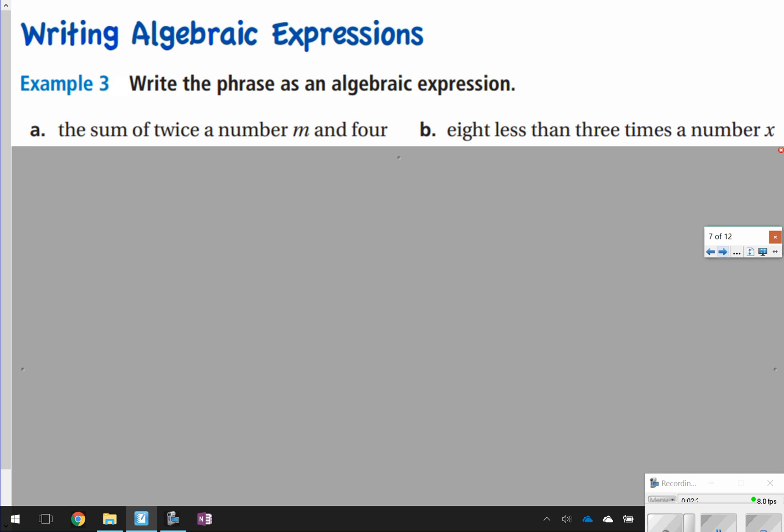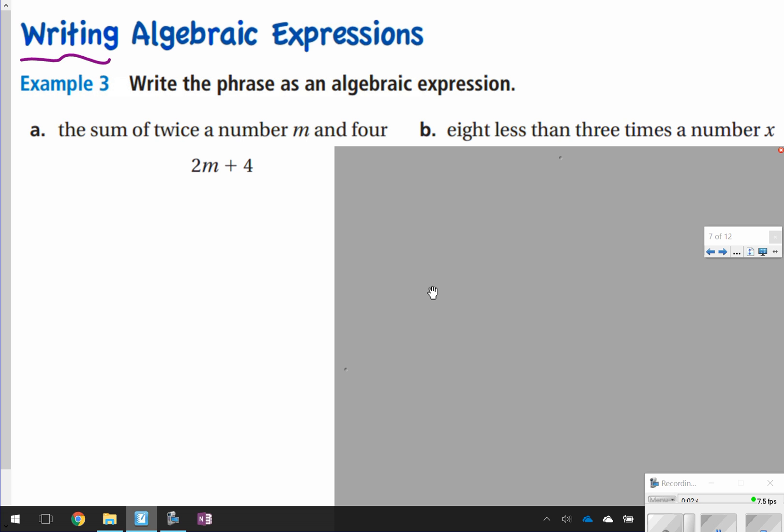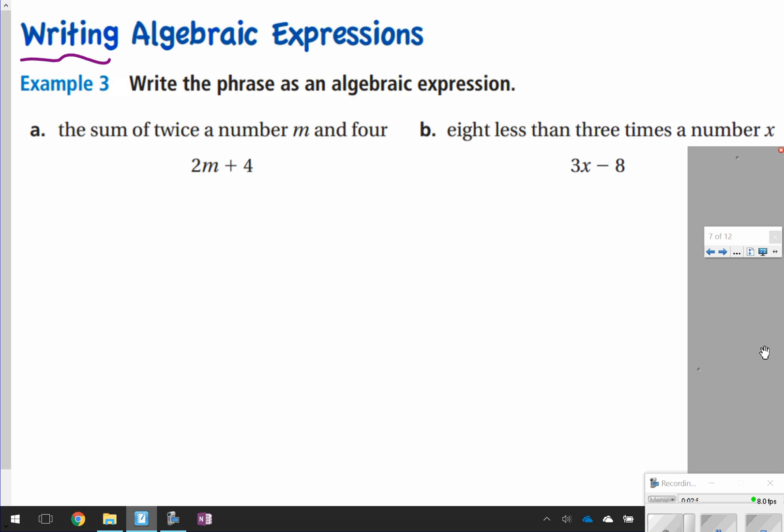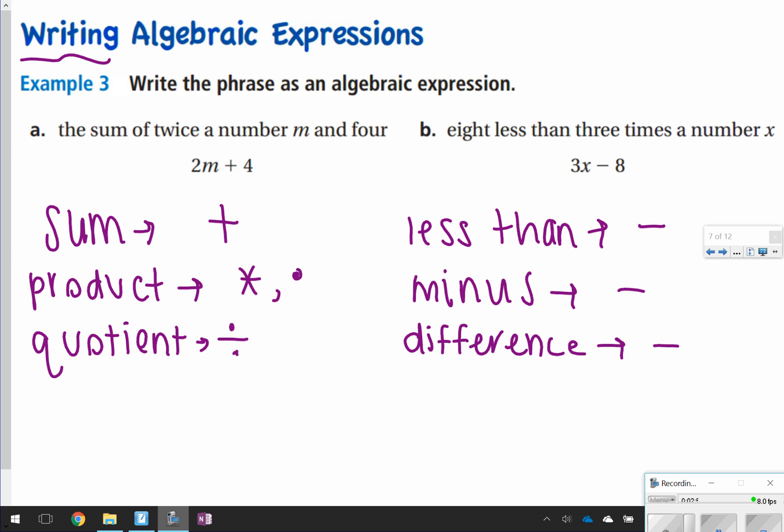The next one, we're just going to talk about how to write algebraic expressions. Write the phrase as an algebraic expression. This just means you're going to see numbers and letters, or constants and variables, mixed into the expression. The sum of twice the number m and 4 means that you're going to add 2m plus 4. 8 less than 3 times the number x means that you're going to be subtracting 8 from 3 times x.